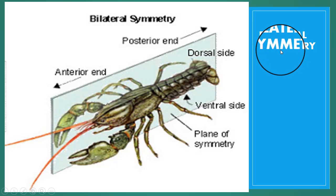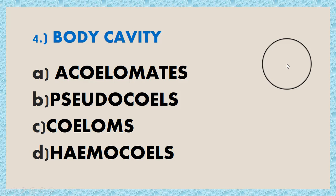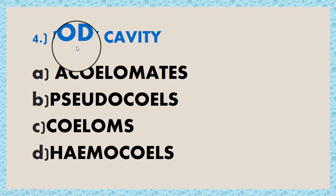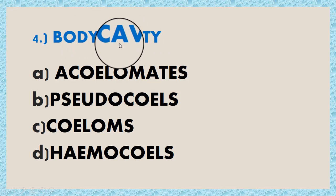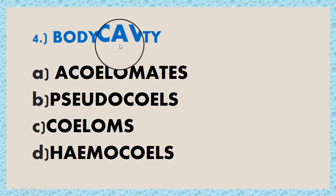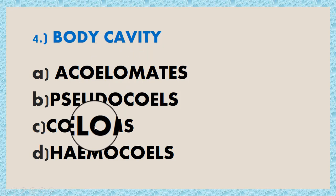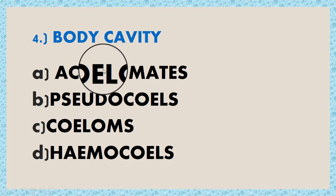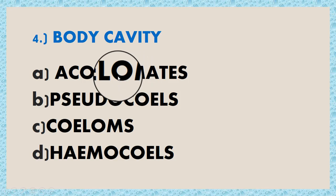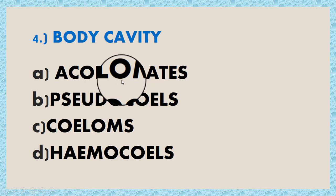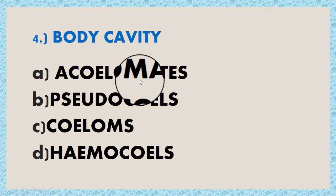The next basic point is body cavity, also called coelom. A body cavity is a fluid-filled space between the gut and the outer body wall of an animal. There are four types: acoelomates, pseudocoelomates, coelomes, and hemoceles. Acoelomates are animals without a coelom or body cavity — 'a' means without and 'coelous' means cavity. Best examples of acoelomates are flatworms, cnidarians, and platyhelminthes.